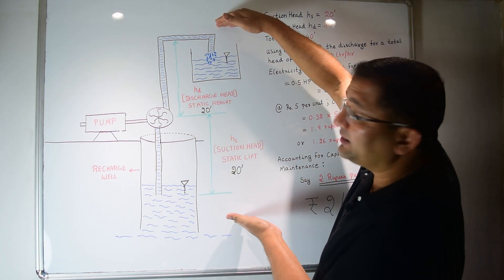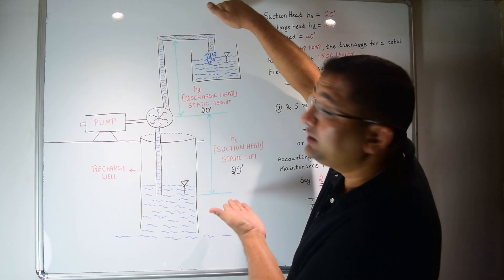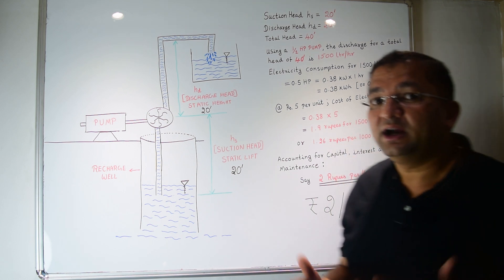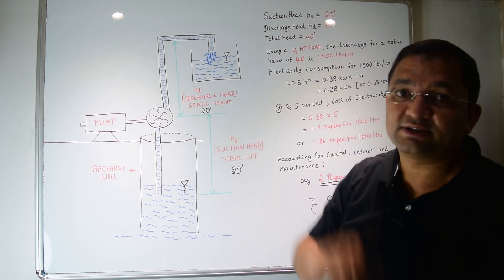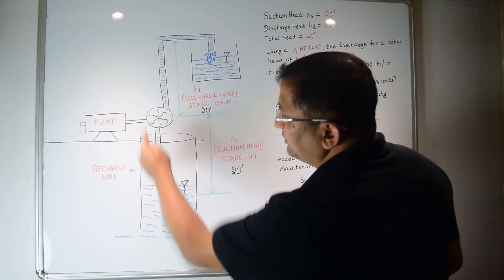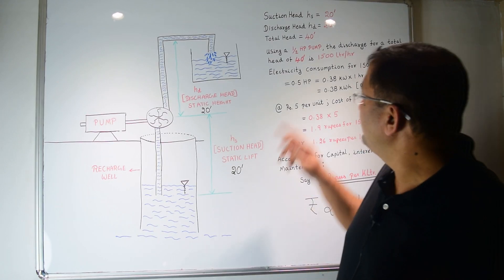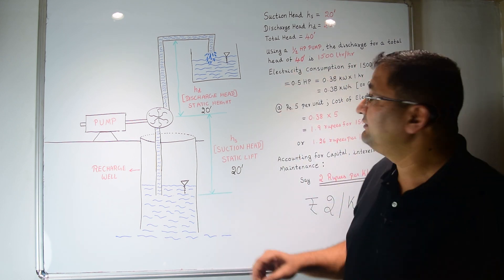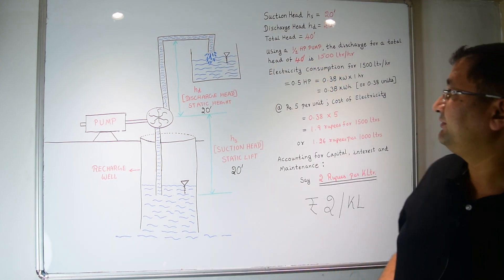So the delivery head or the discharge head is 20 feet. So the total head becomes 40 feet. So the pump has to suck the water for 20 feet and deliver further for another 20 feet. So now we will use a half HP or a 0.5 HP pump to do this work. So this is a 0.5 HP pump which will now suck the water and deliver it. So if the 0.5 HP pump runs for an hour...